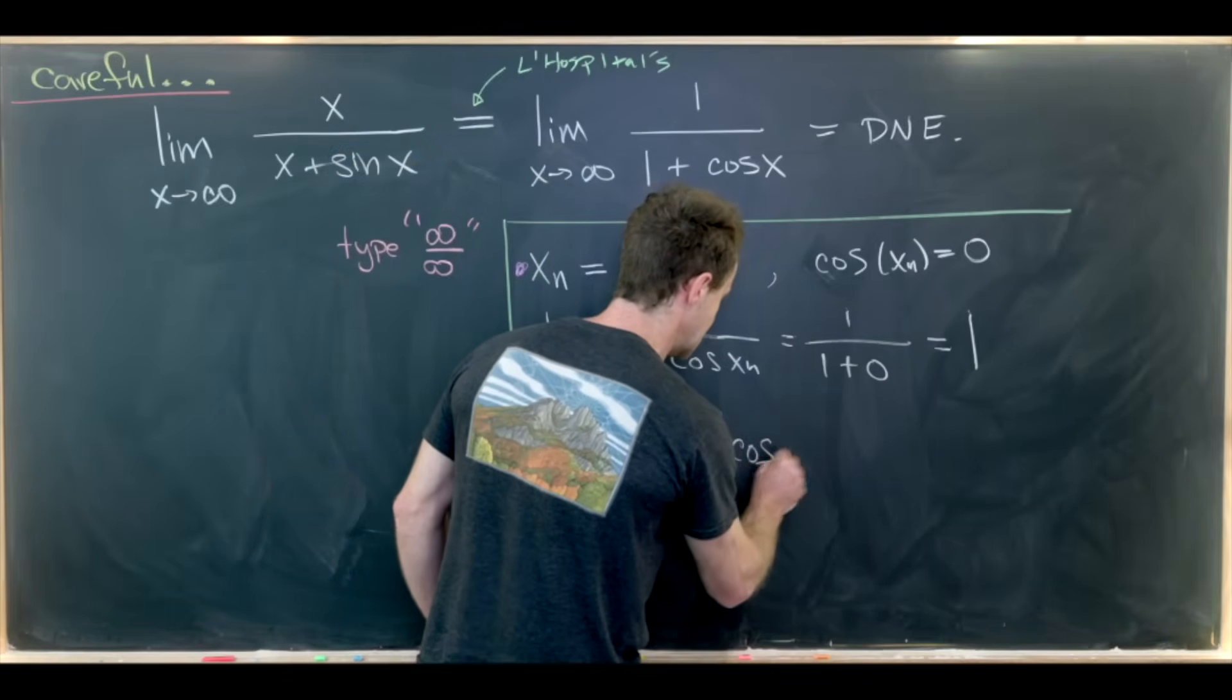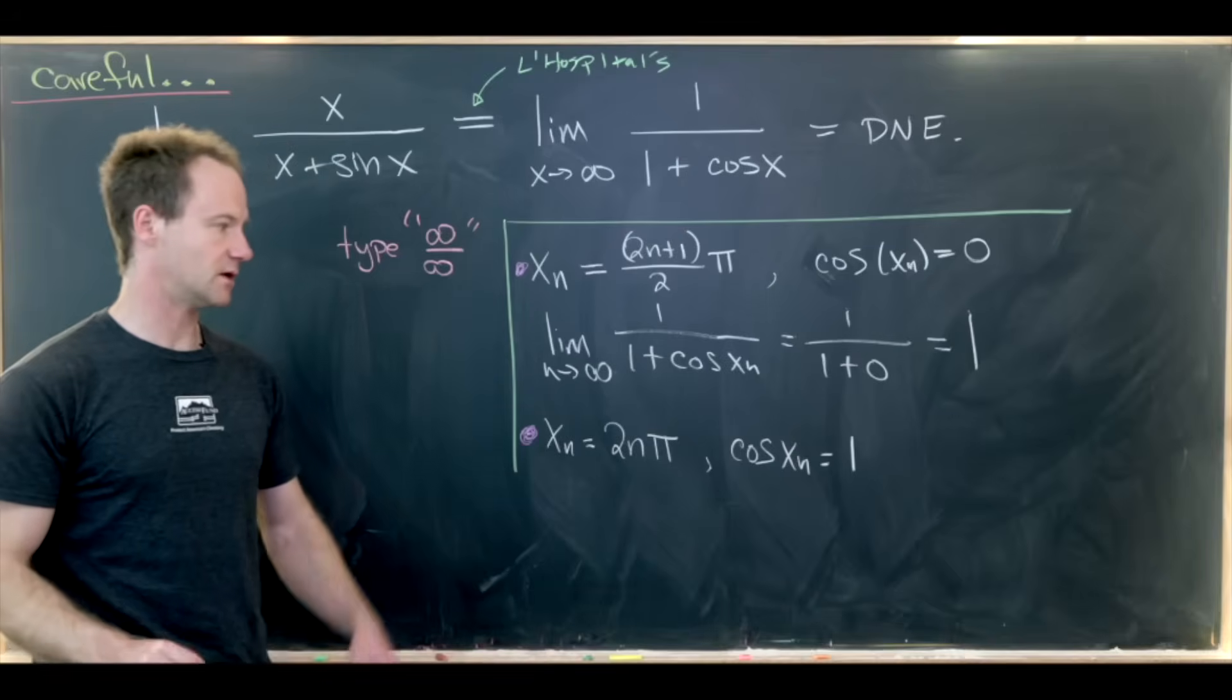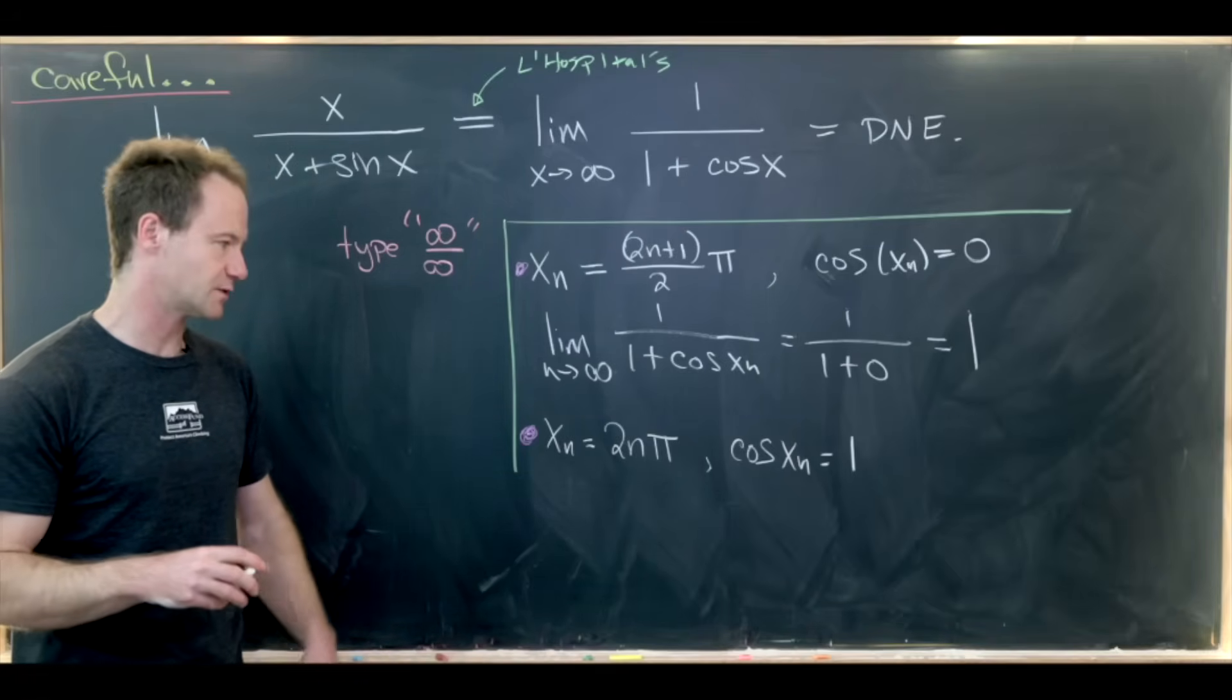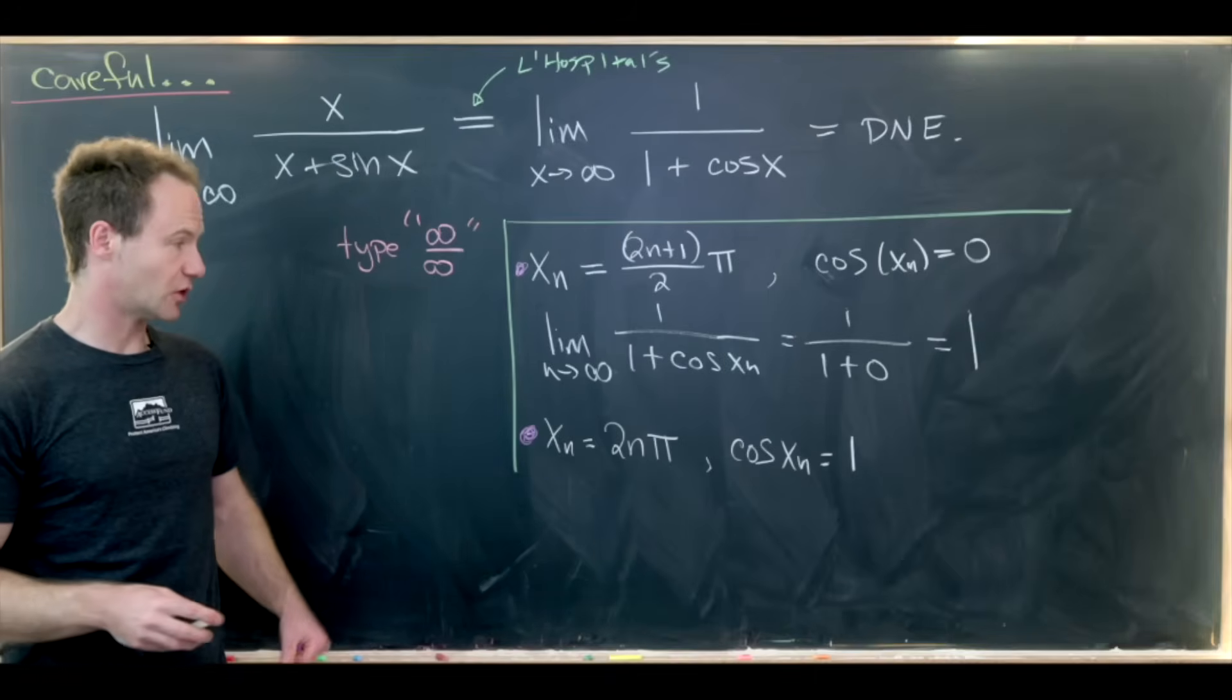And notice that all even multiples of pi, cosine takes on the value of 1. So cosine of 0 pi is 1, cosine of 2 pi is 1, cosine of 4 pi is 1, so on and so forth.